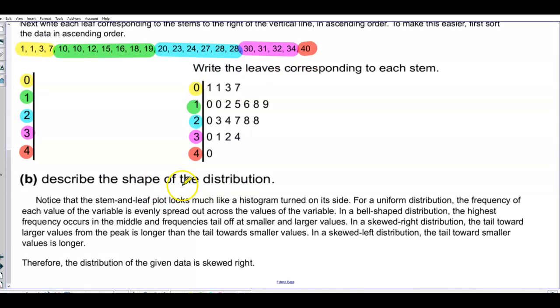And now we want to describe the shape of the distribution. Now notice that the stem and leaf plot looks much like a histogram turned on its side. So for a uniform distribution, the frequency of each value of the variable is evenly spread out across the values of the variable. In a bell shaped distribution, the highest frequency occurs in the middle, and the frequencies tail off at smaller and larger values.